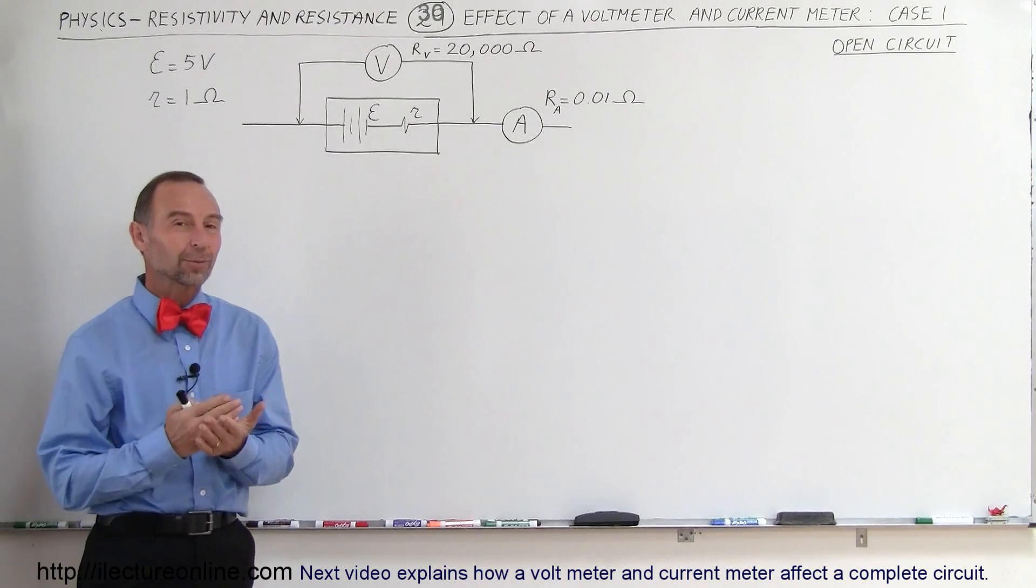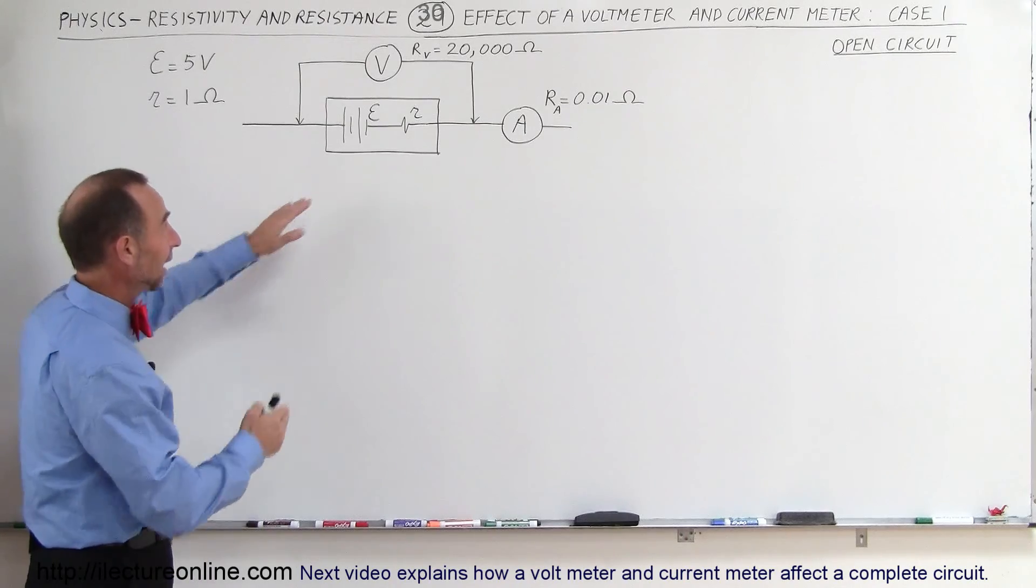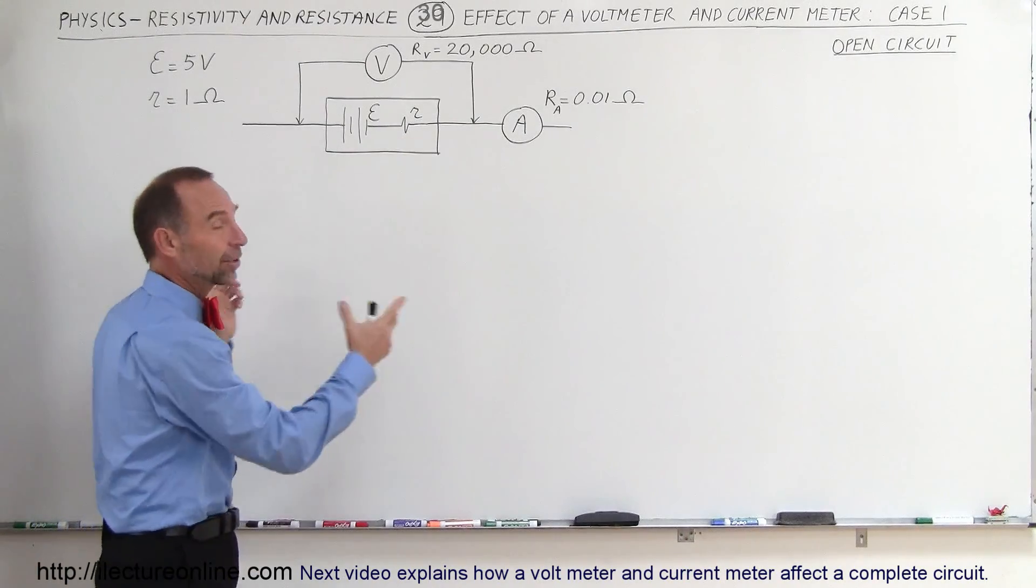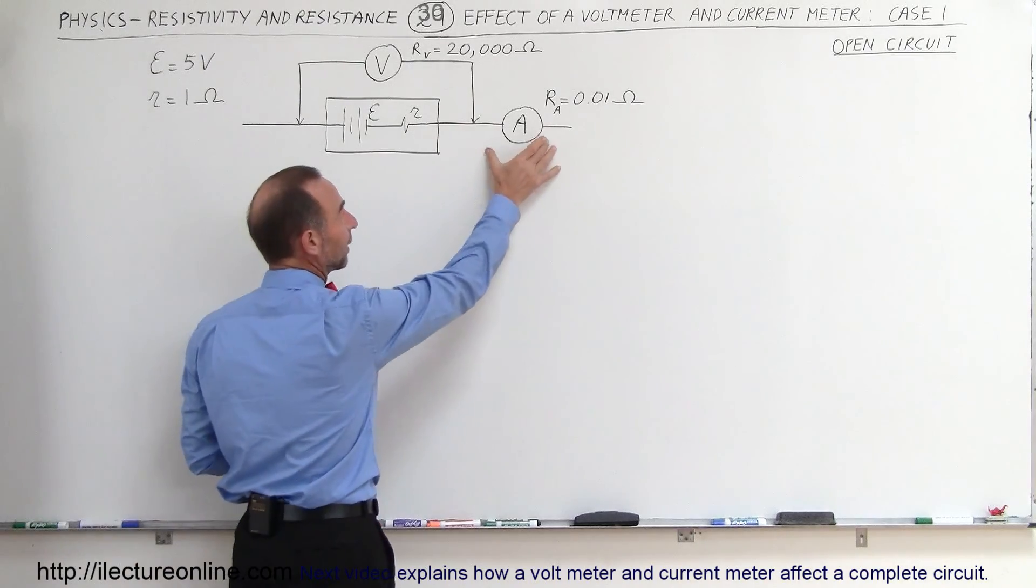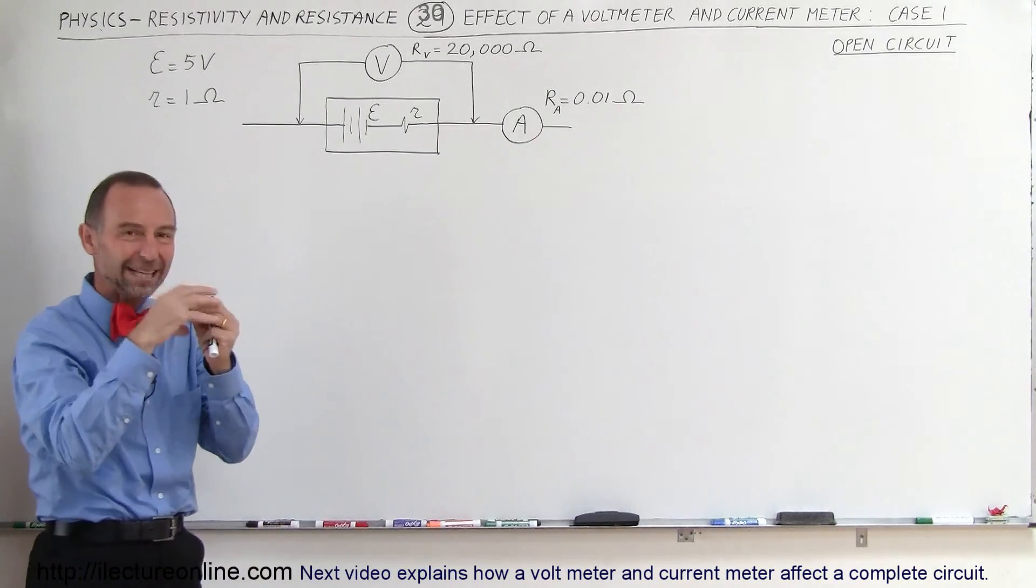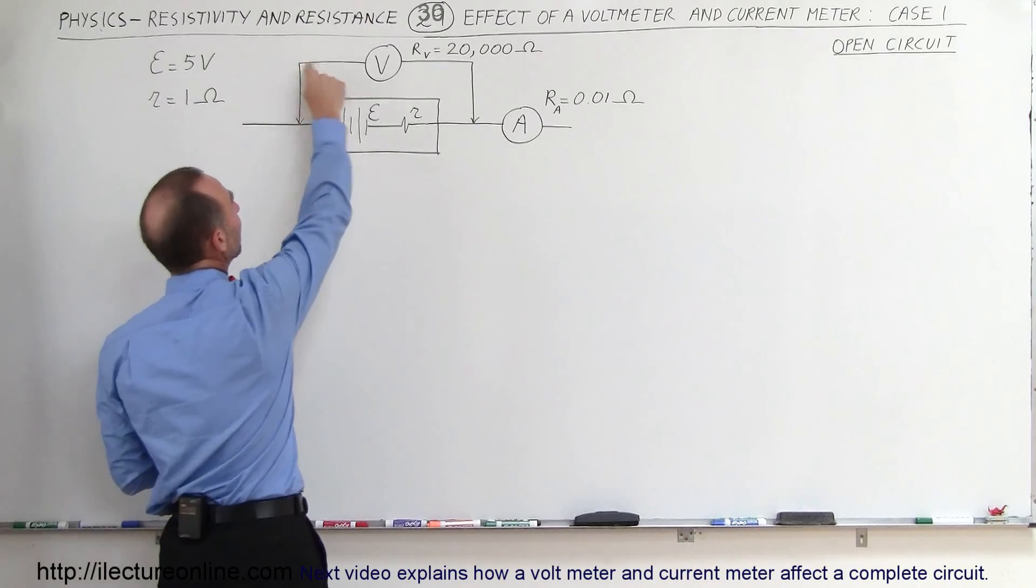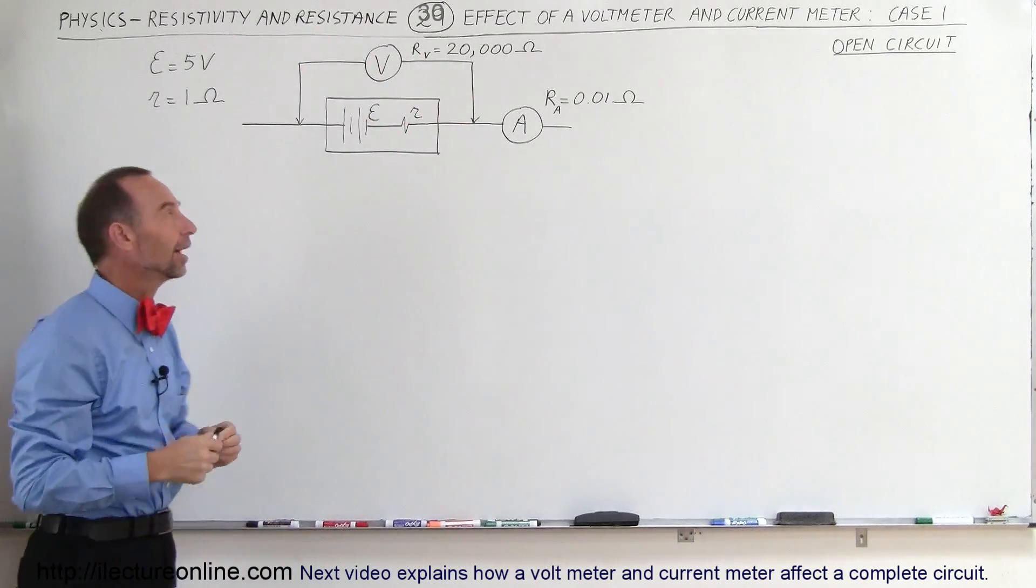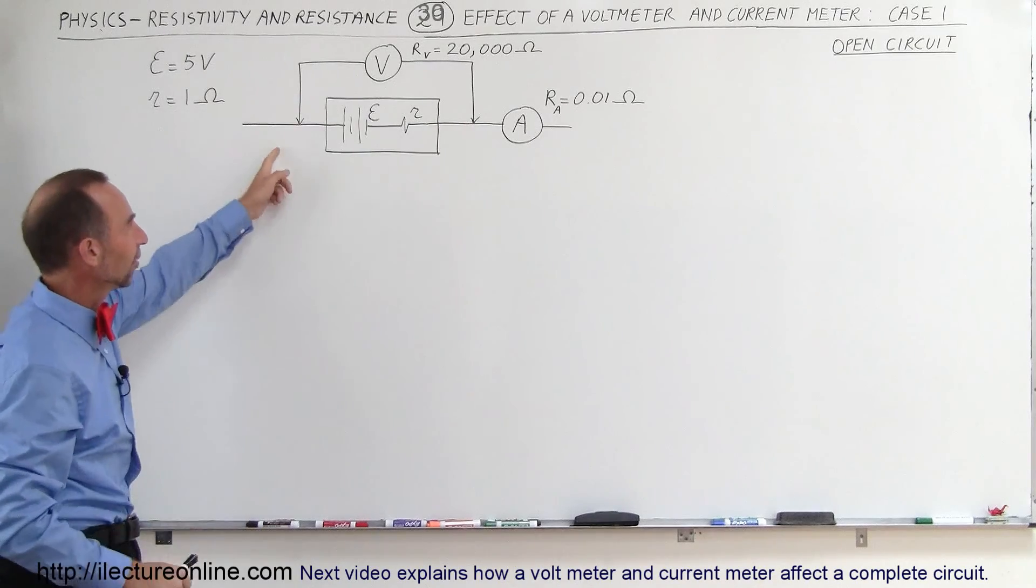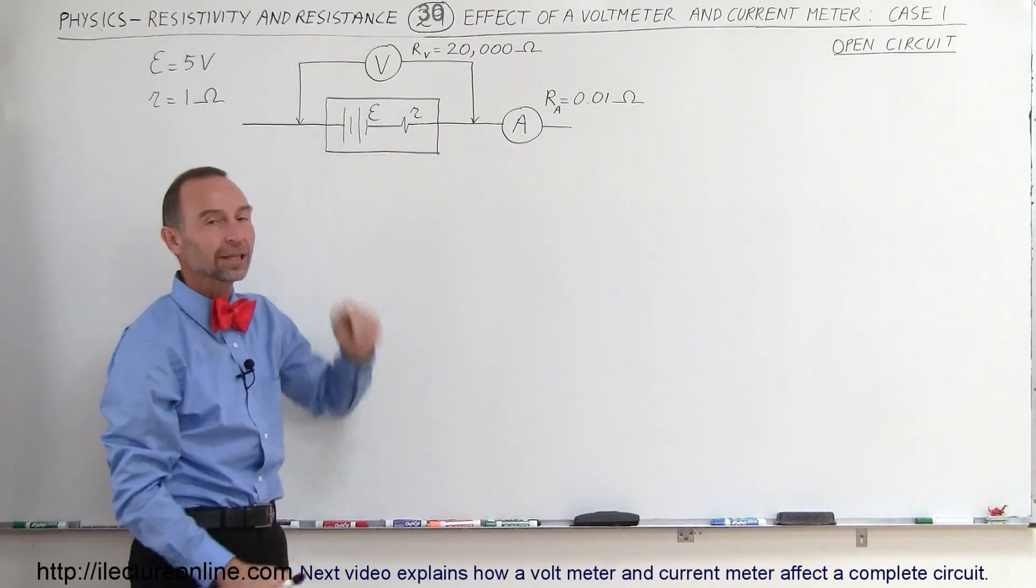We're first going to start out with just a simple battery that has some internal resistance and it's not connected to anything else. So we're going to attach a current meter right there. Remember, a current meter has to be in the circuit itself. Then we attach a voltmeter which is clamped onto the circuit from the outside across some device. In this case, it's going to be across the battery with the internal resistance.